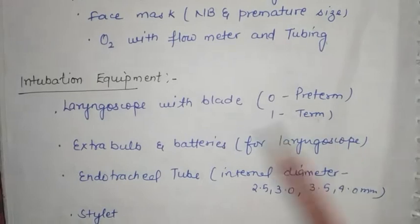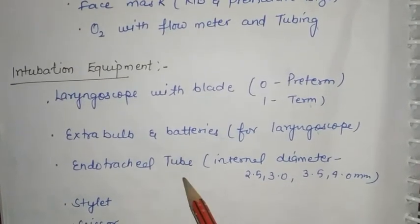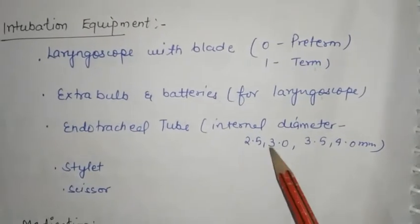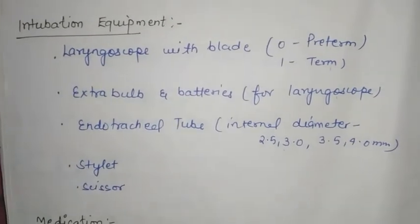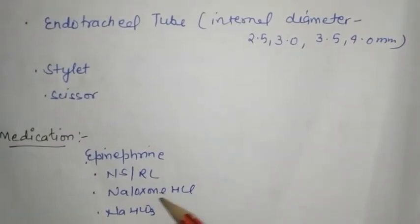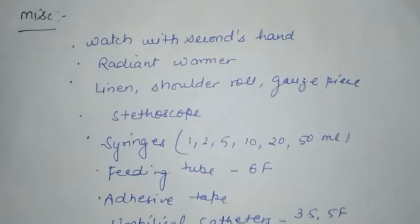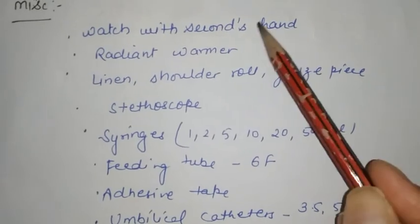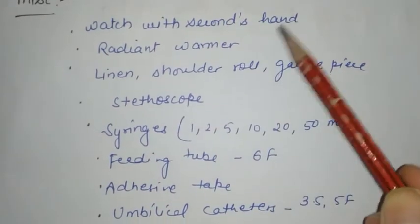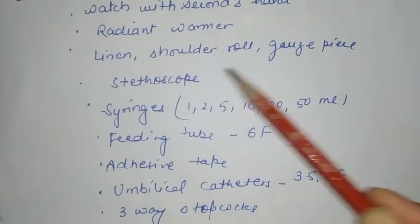Intubation equipment includes a laryngoscope with blade sizes 0 for preterm and 1 for term, extra bulbs and batteries, and endotracheal tubes with internal diameters of 2.5, 3.0, 3.5, and 4.0 mm with stylet. Medications include epinephrine, normal saline, Ringer's lactate, naloxone hydrochloride, and sodium bicarbonate.